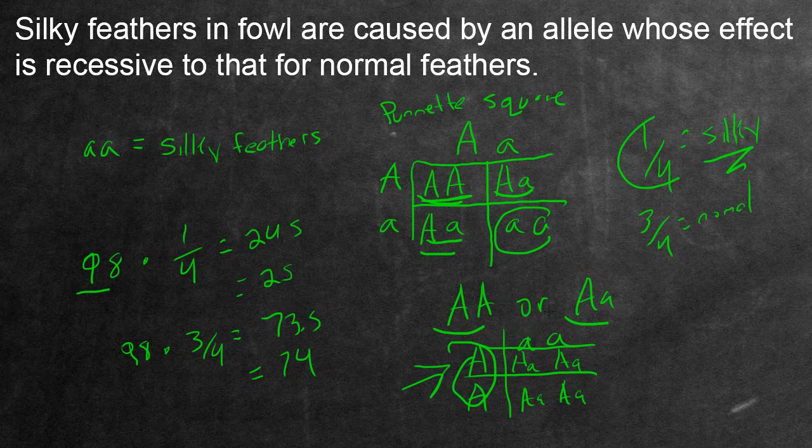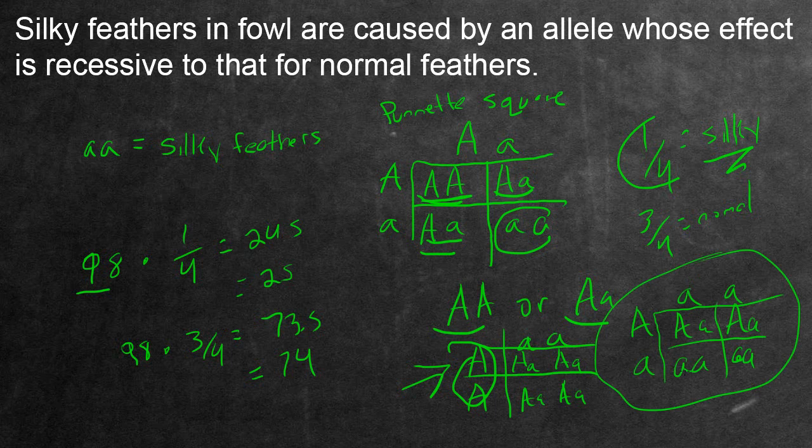Similarly, if let's say the normal bird actually had a genotype of heterozygous right here, well, if you crossed it with a homozygous recessive, you would essentially get this type of Punnett square right here. Notice that there's a one-to-one proportion. One half of these progeny here are homozygous recessive, and the other half is heterozygous. This says that half of the progeny are going to be silky, and the other half are going to be normal.